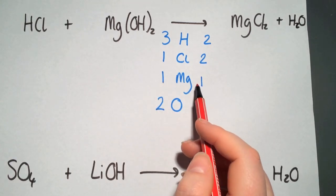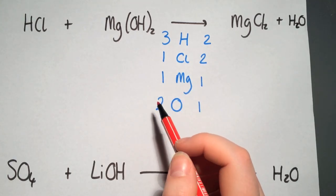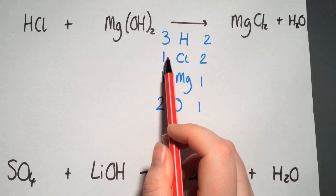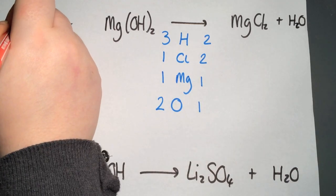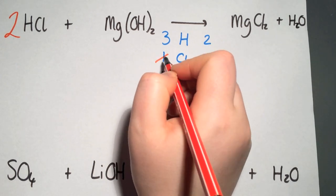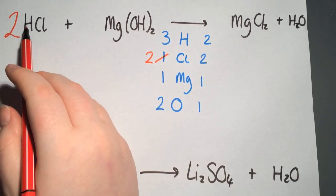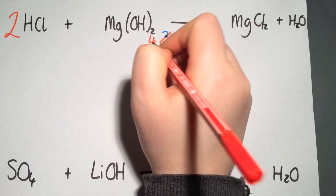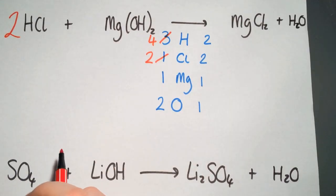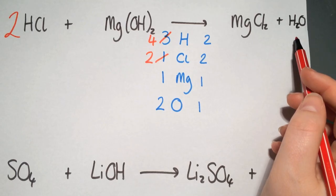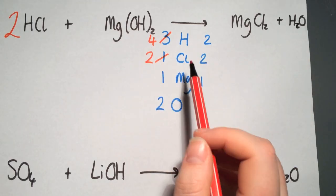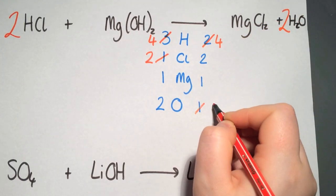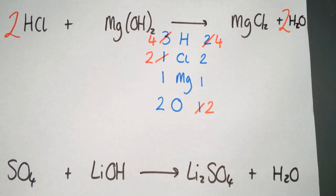Following the procedure of looking at metals first, the magnesium is already balanced. We then look at non-metals like halogens — chlorine has two on this side and only one on the other, so we put a large two in front of the HCl. That multiplies the chlorine by two and also the hydrogen by two, giving us four hydrogens in total. The only remaining imbalance is hydrogen and oxygen, present as water on the right hand side. We need four hydrogens and two oxygens, so putting a large two in front of the water multiplies both appropriately, and everything is now balanced.